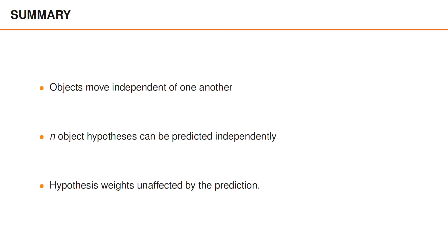To summarize the n-object prediction: the objects move independently of one another. When we have n-object hypotheses, they can be predicted independently, and the hypothesis weights are unaffected by this prediction.